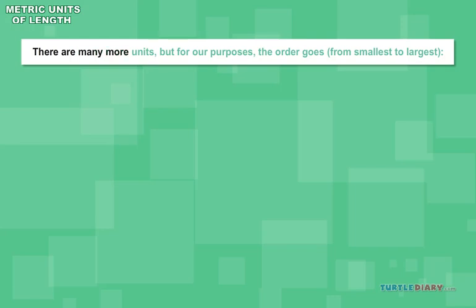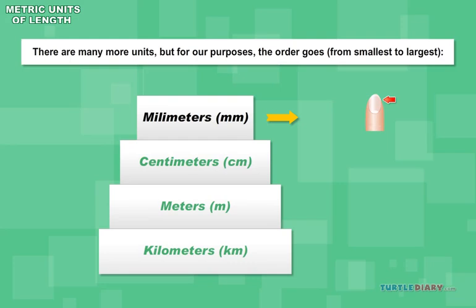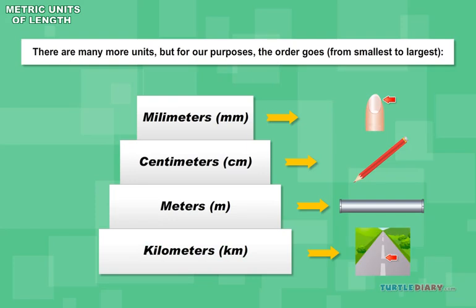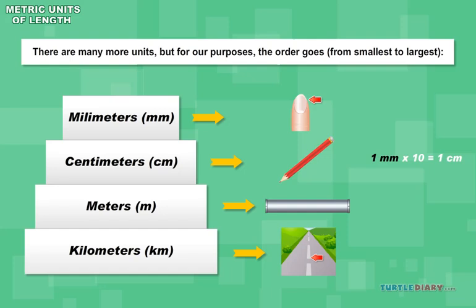There are many more units, but for our purposes, the order goes from smallest to largest: millimeters, centimeters, meters, kilometers. 1 millimeter times 10 equals 1 centimeter.